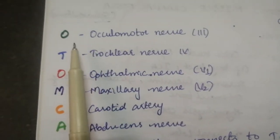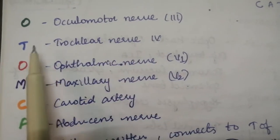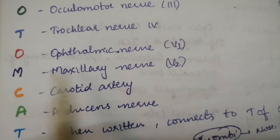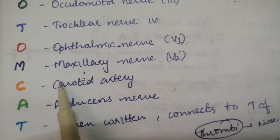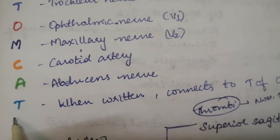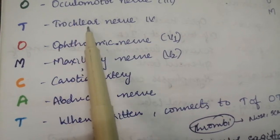O, Oculomotor Nerve. T, Trochlear Nerve. O, Ophthalmic Nerve. M, Maxillary Nerve. C, Carotid Artery. A, Abducens Nerve. And T is common like you are having trochlear nerve.